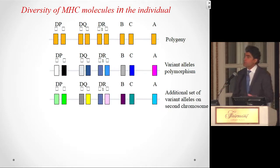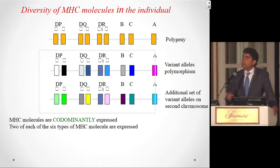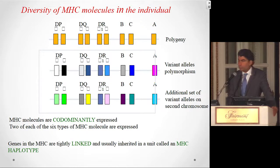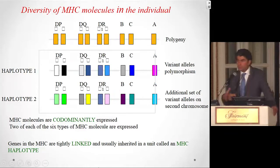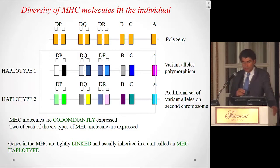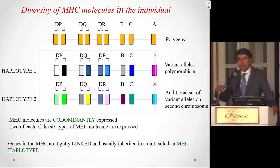We have one allele from the mother and one from the father, and these are codominantly expressed — so A from the father and A from the mother are both expressed on the same cell. We don't have only six molecules; we have 12. In kidney matching, we traditionally talk about only six antigens — A, B, and DR — because in the early era of transplantation, those were thought to be the most immunogenic. Now we know all the others are important too, especially regarding chronic rejection.